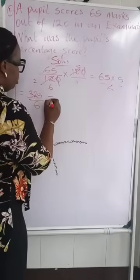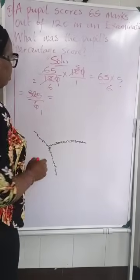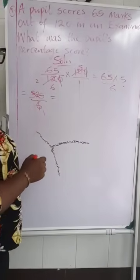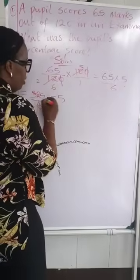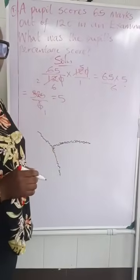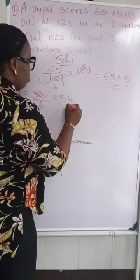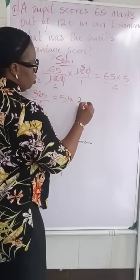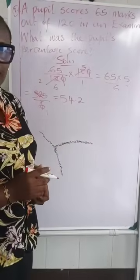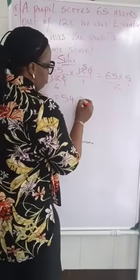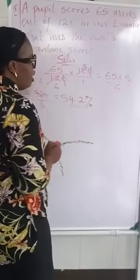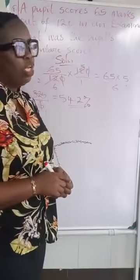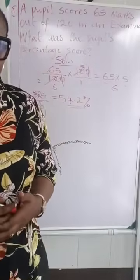To divide 325 by 6: 6 goes into 32 five times — 6 times 5 is 30, remainder 2. Bring down the 5: 6 goes into 25 four times — 6 times 4 is 24, remainder 1. That 1 over 6 is approximately 0.2. So what the child had in percentage is 54.2%. This is the final answer.